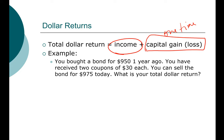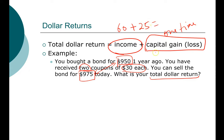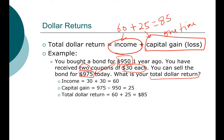Let's take a look at a simple example. Say you bought a bond a year ago for $950. You receive two coupons of $30 each, and you can sell the bond today for $975. What is your total dollar return? The income component: you get two coupons of $30 each, giving us $60 in coupon income. You purchased the bond for $950 but sold it for $975, so you get $25 in capital gain. Together, you have made $85 on this investment: $60 income plus $25 capital gain equals $85.